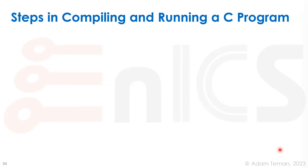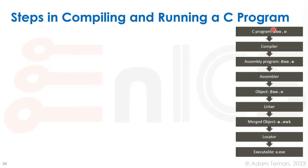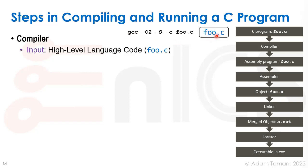Let's go over the steps in compiling and running a high-level program. We'll start with a C file called foo.c and invoke the GCC compiler, one of the open source standard compilers. We take as input a high-level language program written in C, using the -c flag for foo.c.